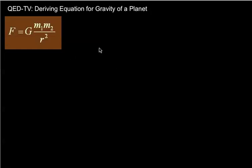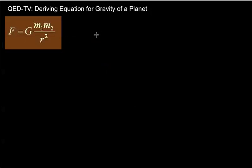In this video we want to derive an equation for the gravity of a planet, knowing only two things. If I gave you the mass of a planet and the radius of the planet, I would like you to be able to figure out what the gravity is on the surface of that planet.